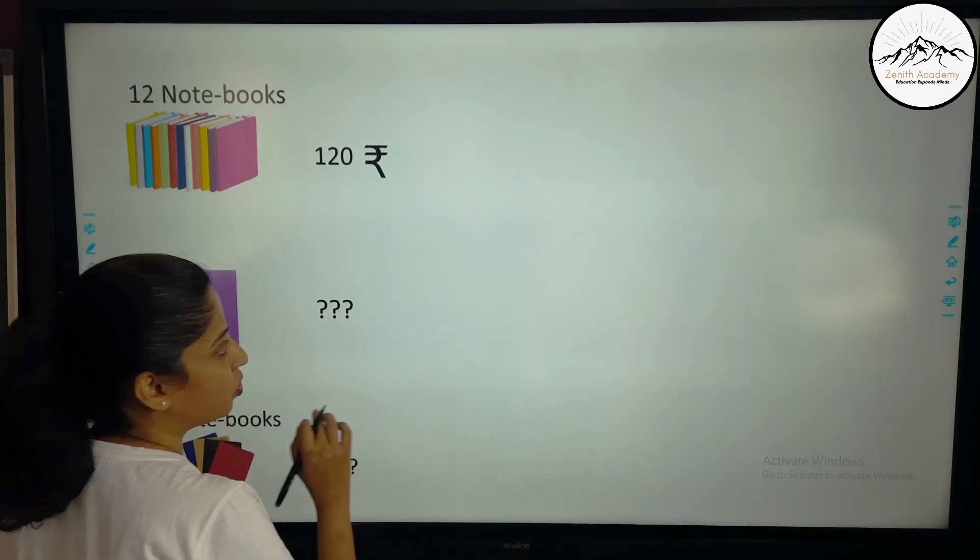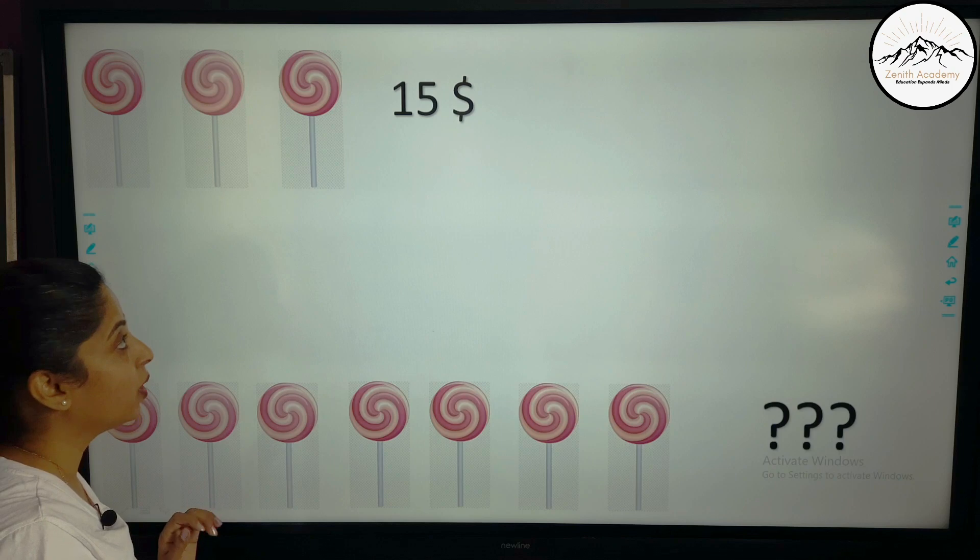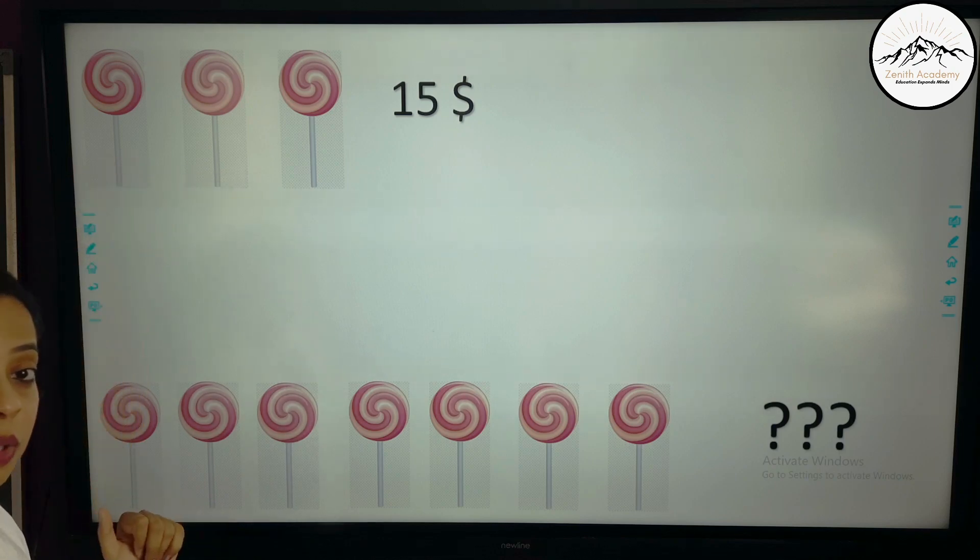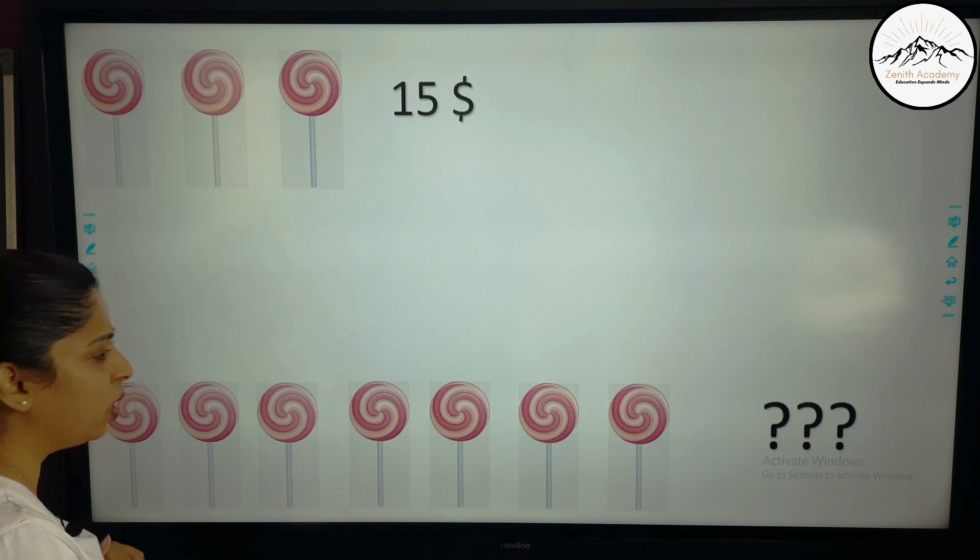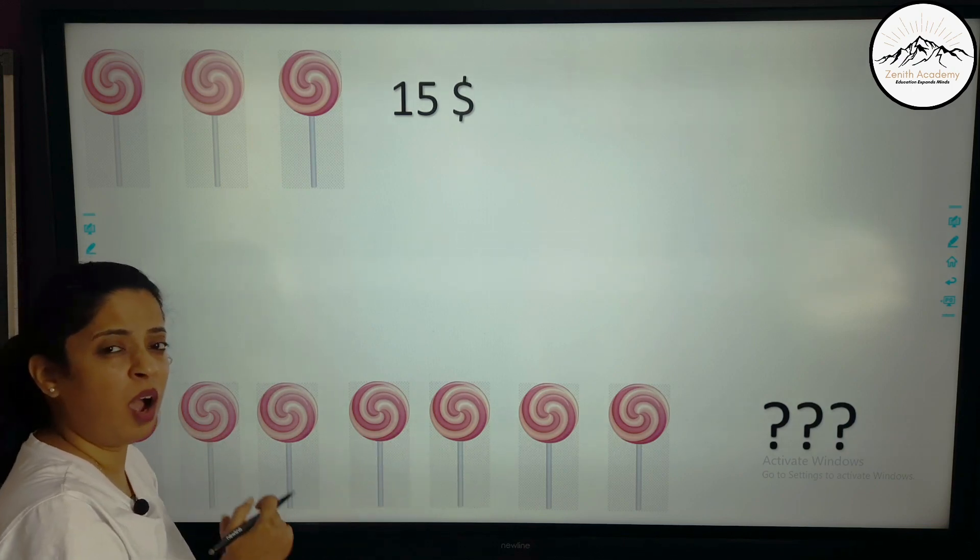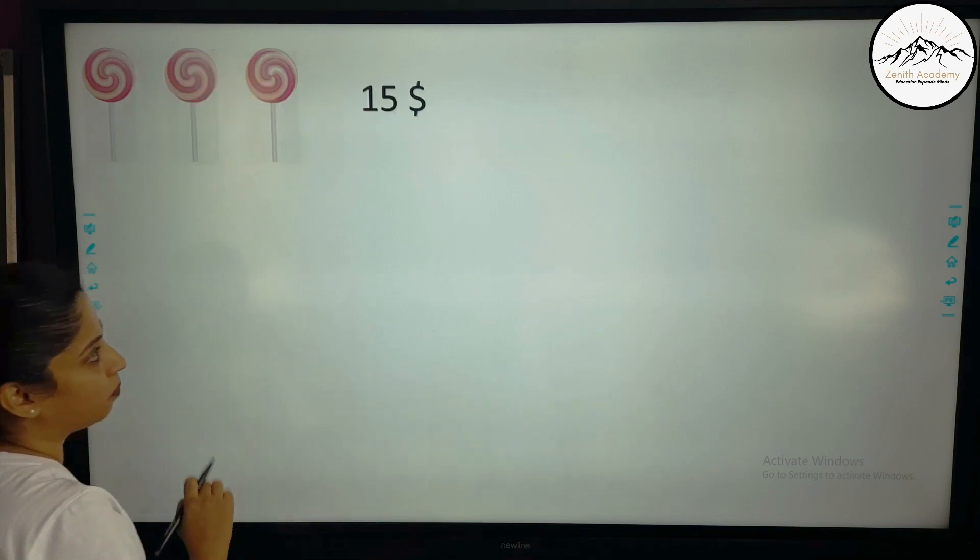Now after purchasing books, we moved ahead. Now we saw set of 3 lollipops, the cost is $15. But I have more number of friends. I want 7 lollipops. Now how much do I pay them?